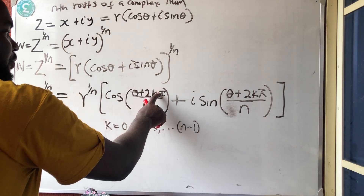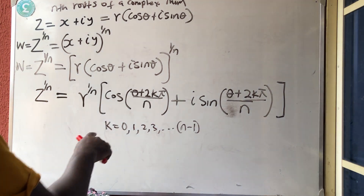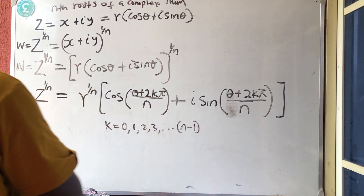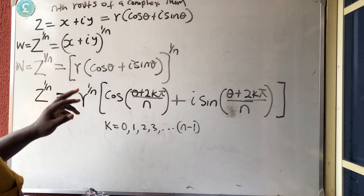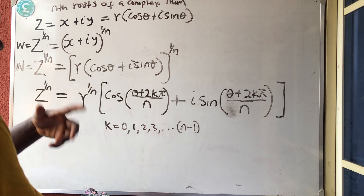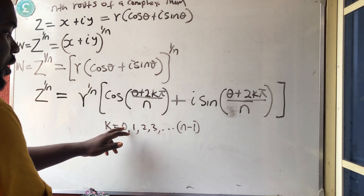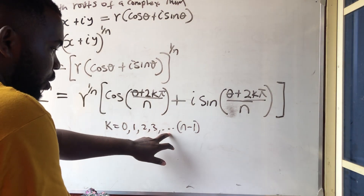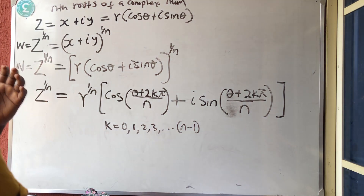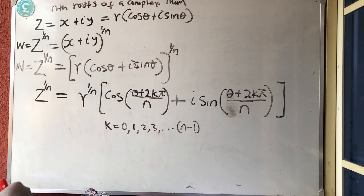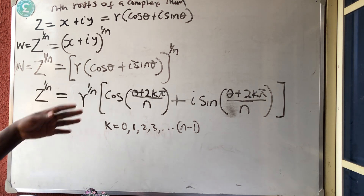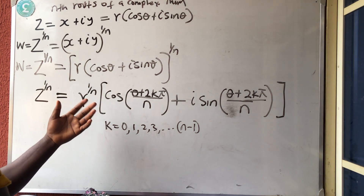Your k always starts from 0 to n minus 1. So which means if n is 5, k will start — you have 5 times — it will start from 0, 1, 2, 3, 4. If you count it: 1, 2, 3, 4, 5. You have 5 times. So that is how it is. This formula is very important, please don't forget this formula.